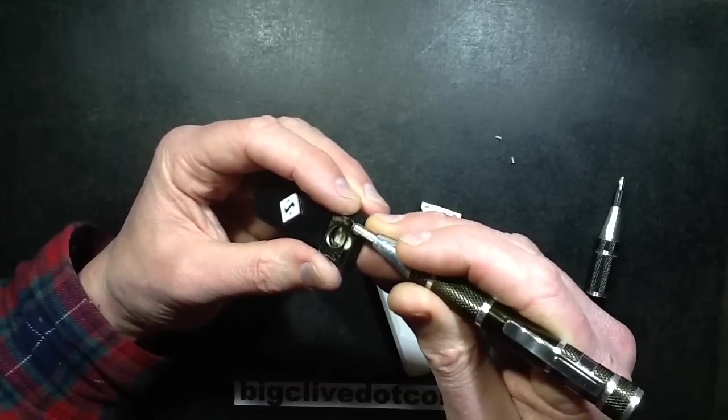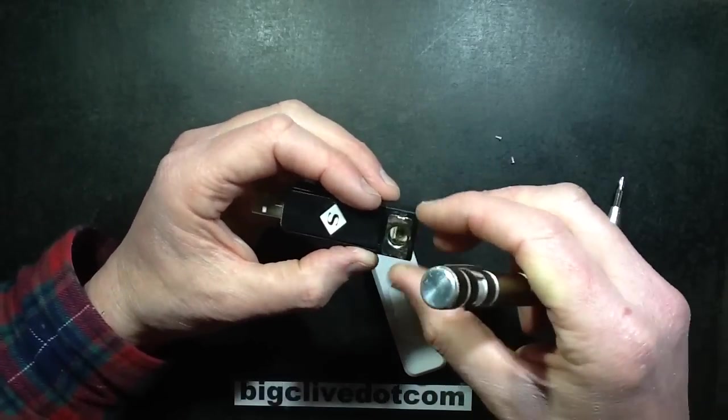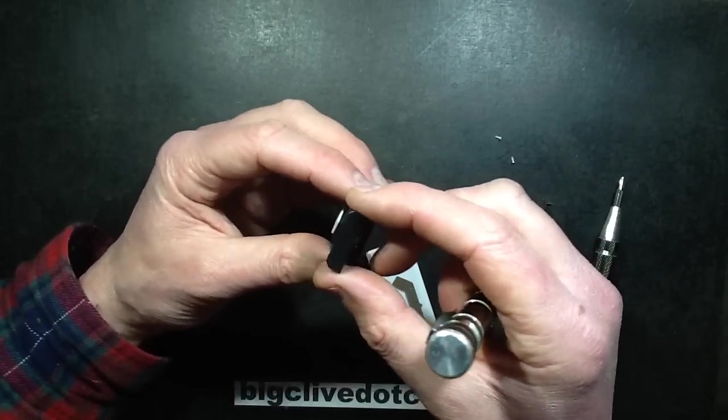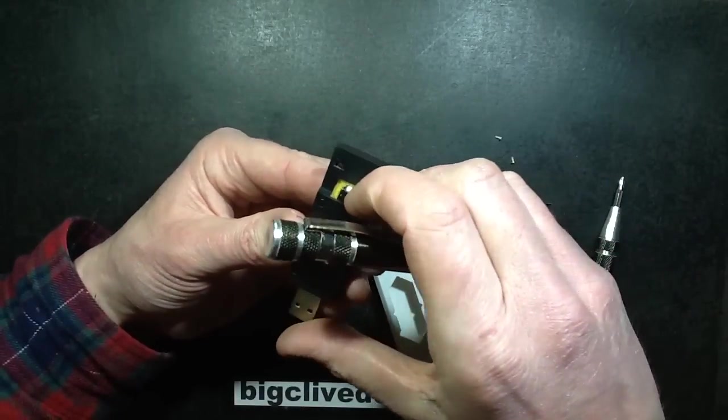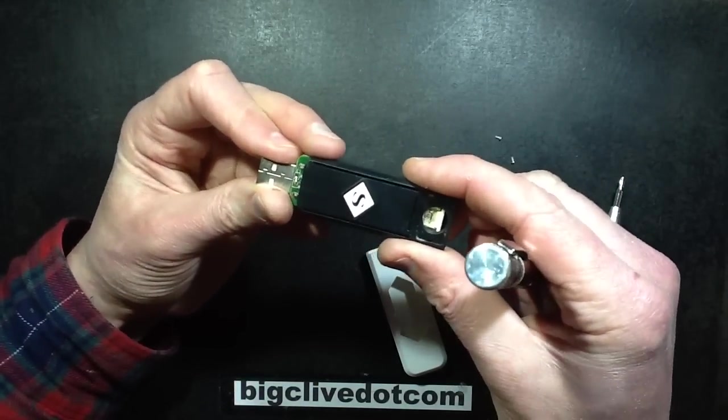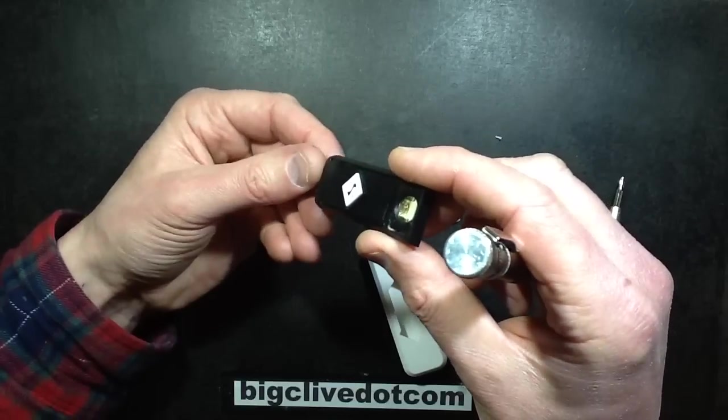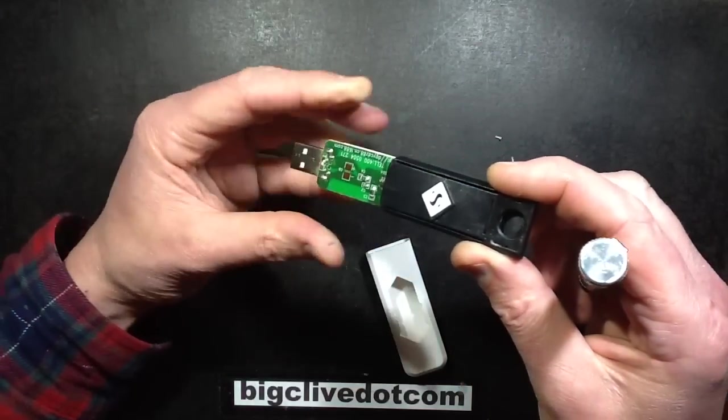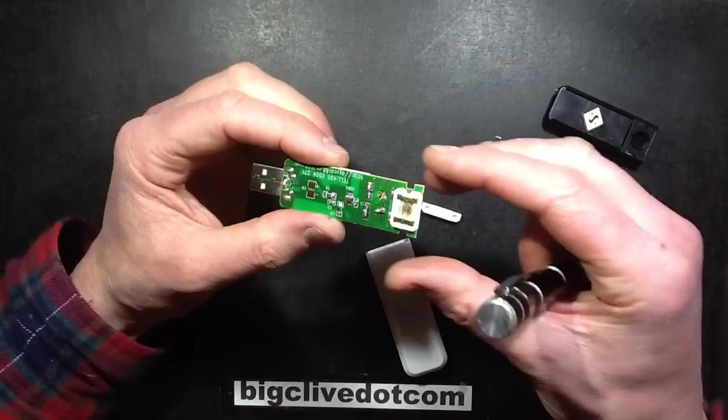I'm not too bothered if I break this because I don't actually smoke cigarettes. It would be handy for lighting joss sticks but I don't really use joss sticks either. Is this going to slide out now? Oh it is. Oh that's quite neat.